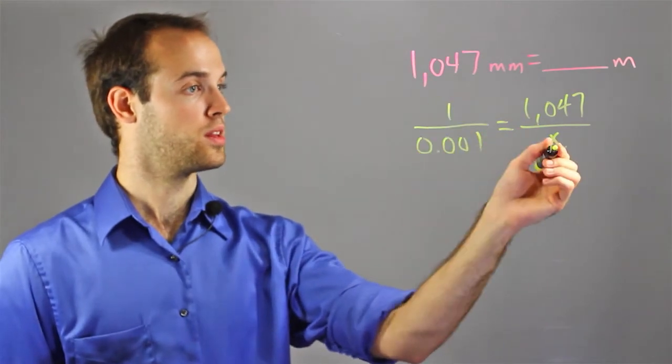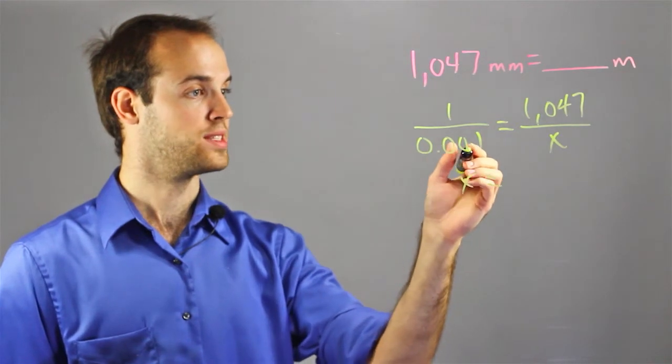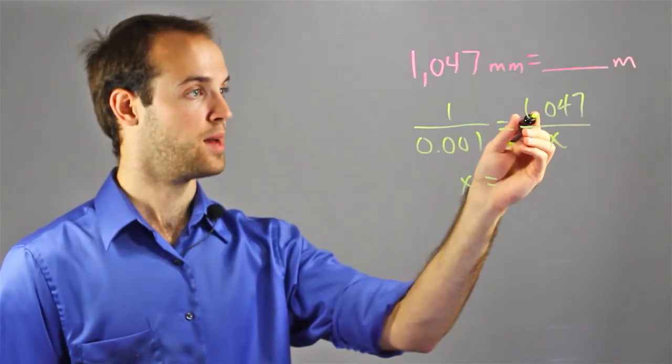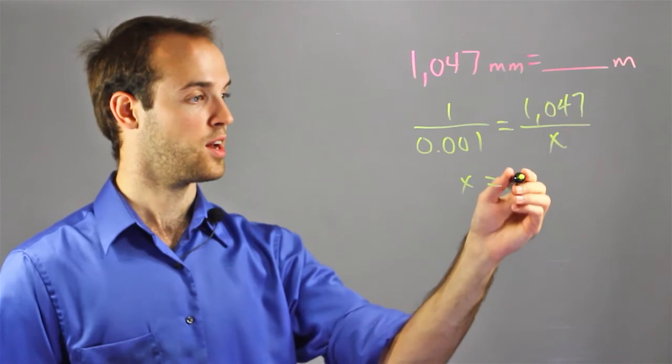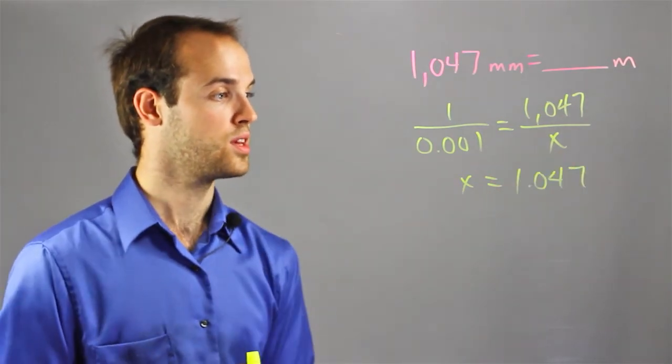I would do this 1 times this x, which is just x, and then I would do 0.001 times 1047, and I would get 1.047.